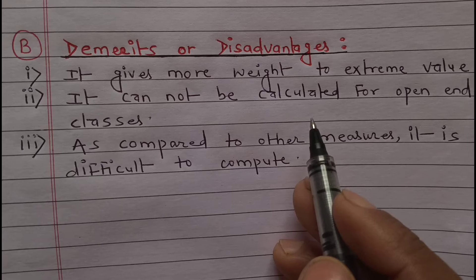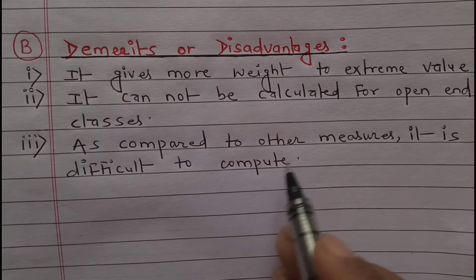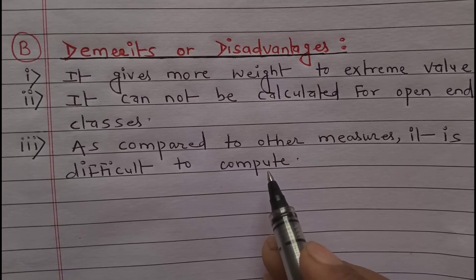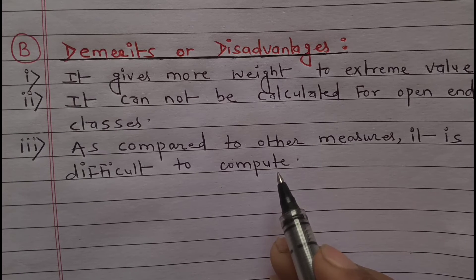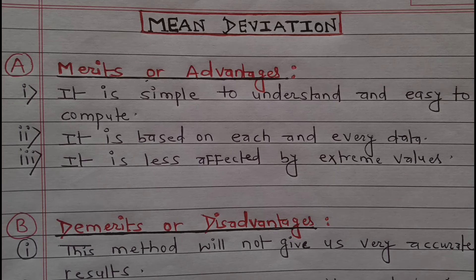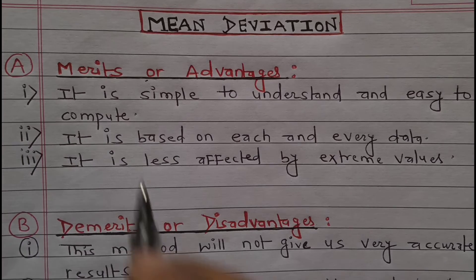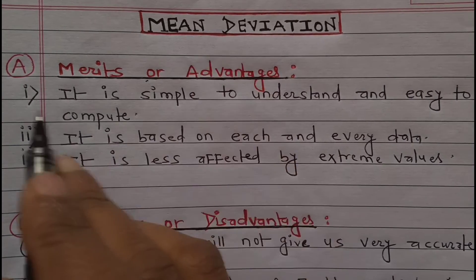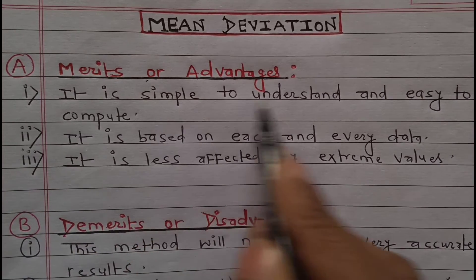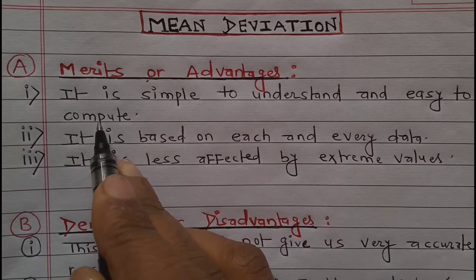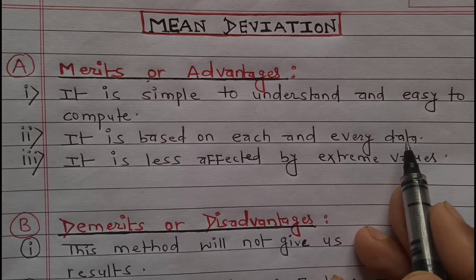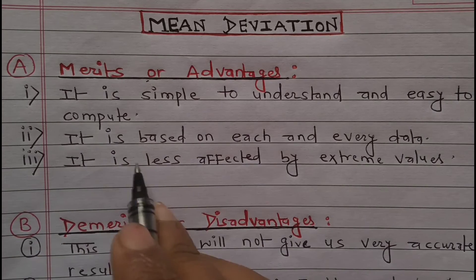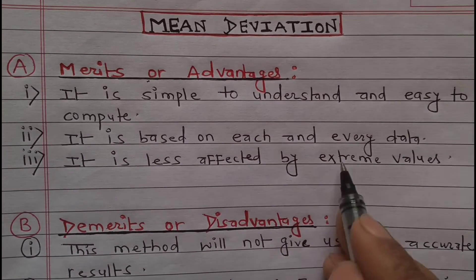Point three — as compared to other measures, it is difficult to compute. Now the merits or advantages of mean deviation: Point one — it is simple to understand and easy to compute. Point two — it is based on each and every data point.